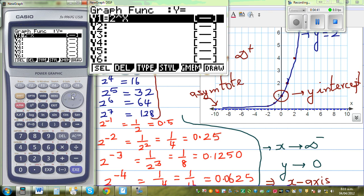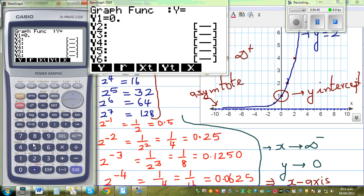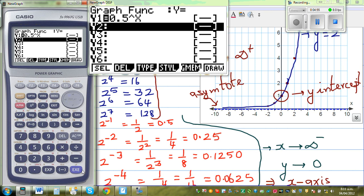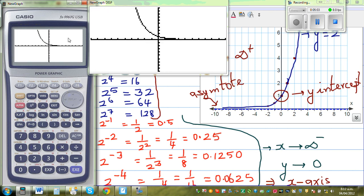So along with this, I told you that if you put say 0.5 raised to x. What type of graph would you expect? Would it be an exponential graph? Or a decay curve? I don't know. So let's draw it. So this is called a decay curve.